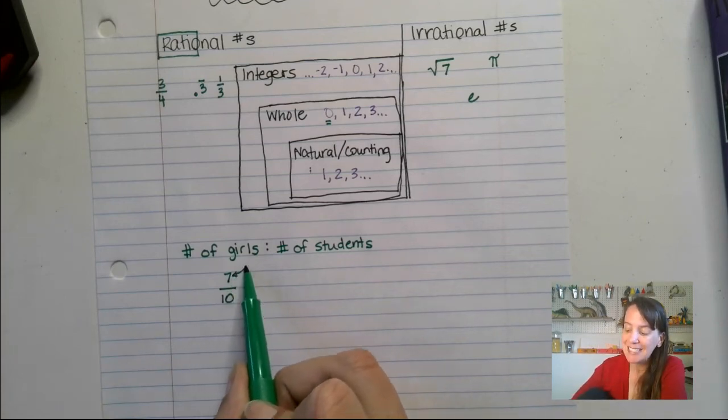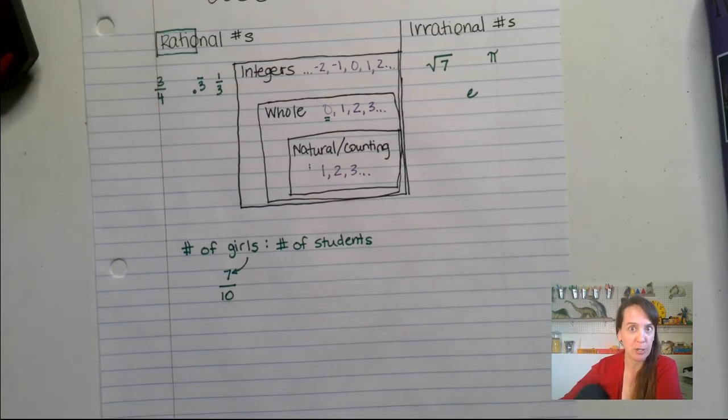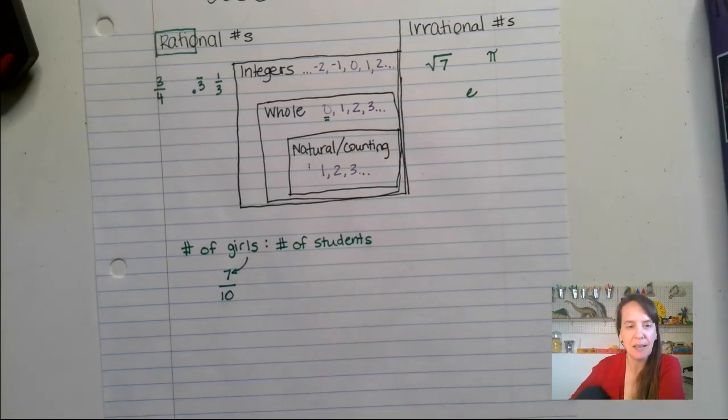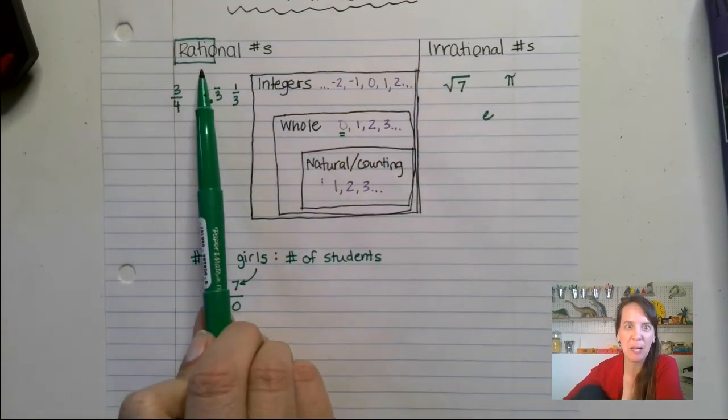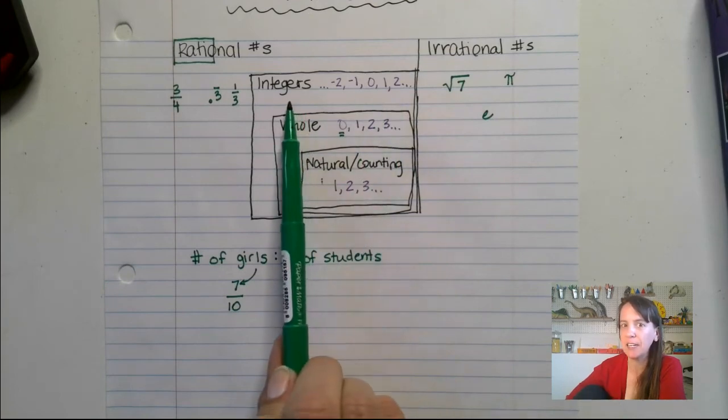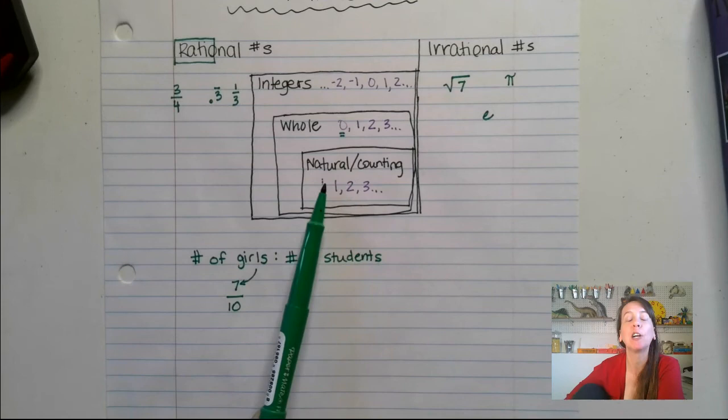The number of girls, that's 7. That is a rational number because it can be written as a fraction, right? We can turn any number into a fraction by putting it over 1. So the number of girls, 7, because that is a fraction, that means it's a ratio and it's a rational number. Is it an integer? Absolutely. 7 would be considered an integer. Is it a whole number? Absolutely. Is it a counting number? Absolutely.